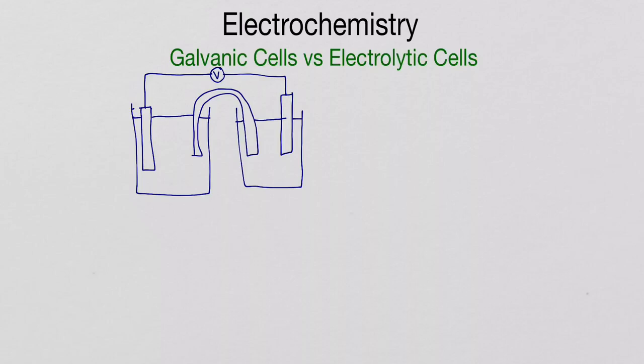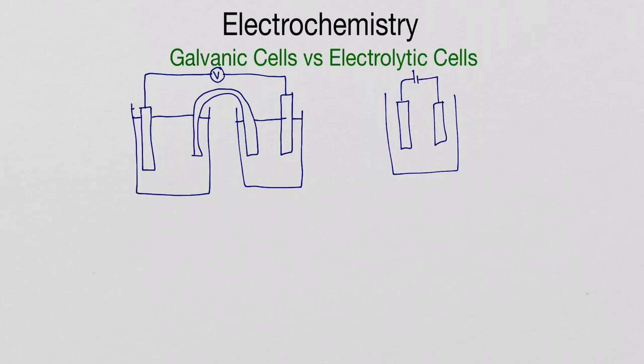For the electrolytic cell, we have a single beaker. Instead of a voltmeter, we've got a battery. We then have two electrodes in the same beaker. That is your general setup for an electrolytic cell — it can be adapted slightly, but that is the general setup.